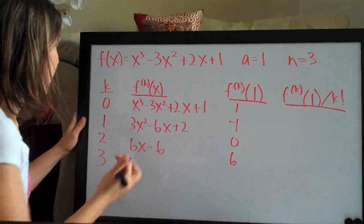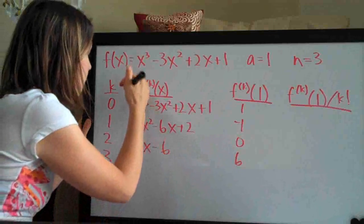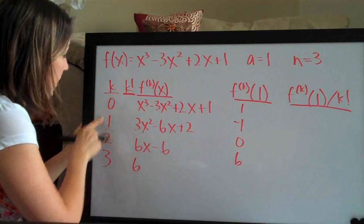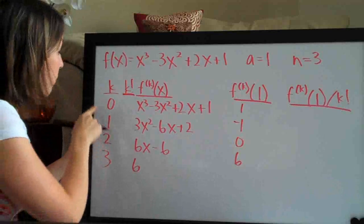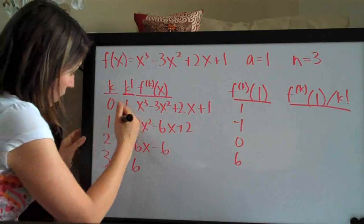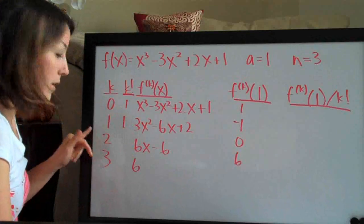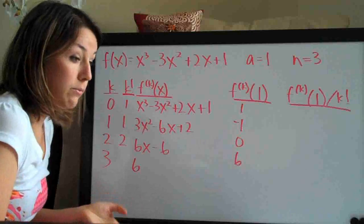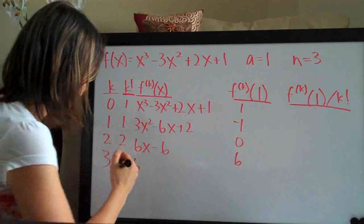So let's just make a k factorial column right here so we can just reference it easily. So 0 factorial is 1. 1 factorial would just be 1. 2 factorial would be 2 times 1, which is just 2. And 3 factorial would be 3 times 2 times 1, which would be 6.